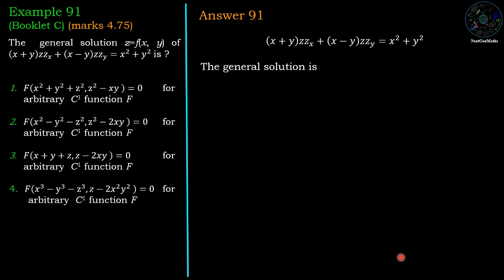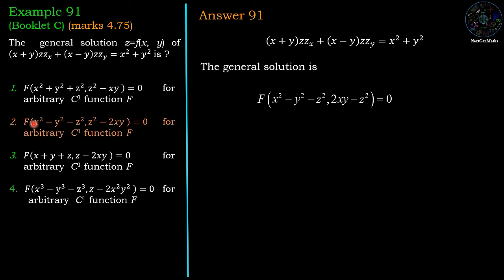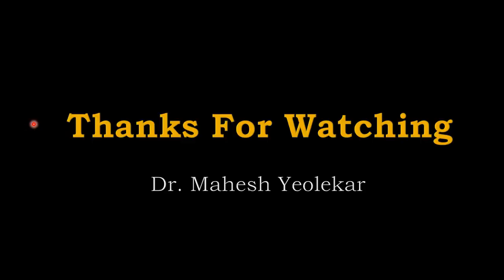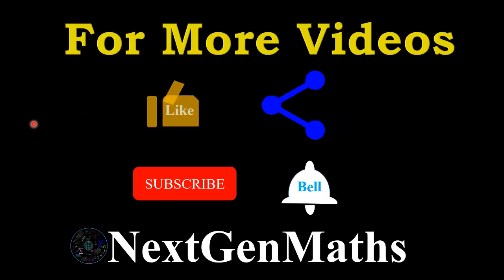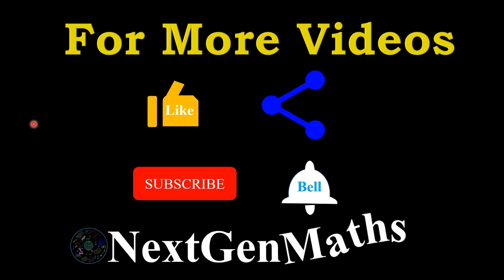Therefore, the general solution of this partial differential equation is f(x²-y²-z², 2xy-z²) = 0, which matches option number 2. So option 2 is the correct answer. Thanks for watching — for more videos, like, share, subscribe, and press the bell icon of Next Gen Maths.